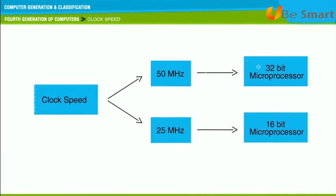For example, a 32-bit microprocessor that runs at 50 megahertz is more powerful than a 16-bit microprocessor that runs at 25 megahertz.